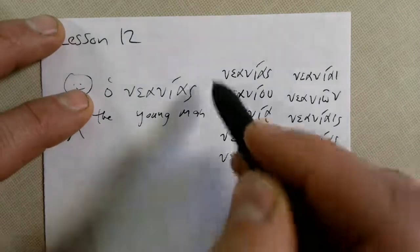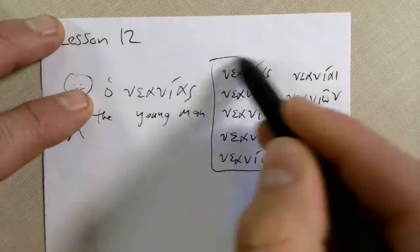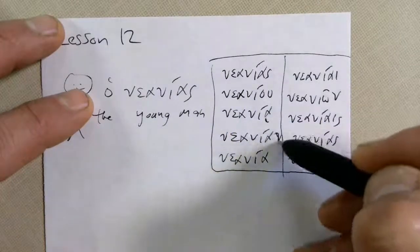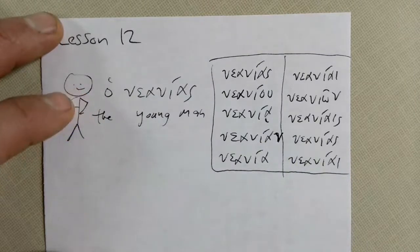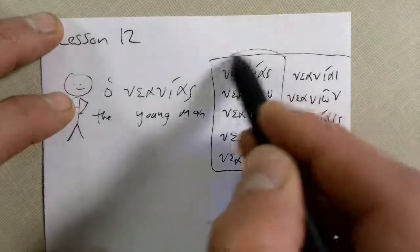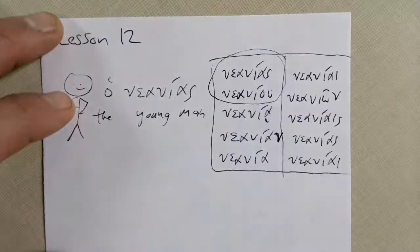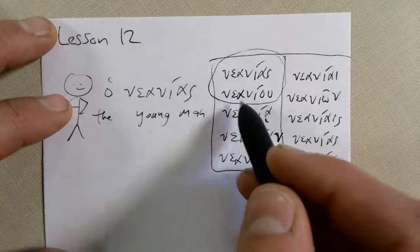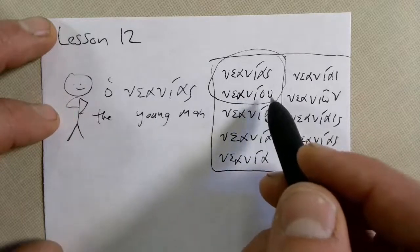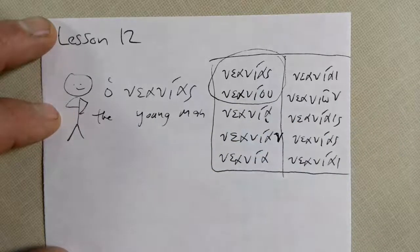There are all ten versions of Naniyas. You'll need to know them, but I wouldn't make flashcards of all of them because you already know most of those endings. The only ones that are new are those two guys. So focus on those. Nanias is young man and Naniyu is of a young man.